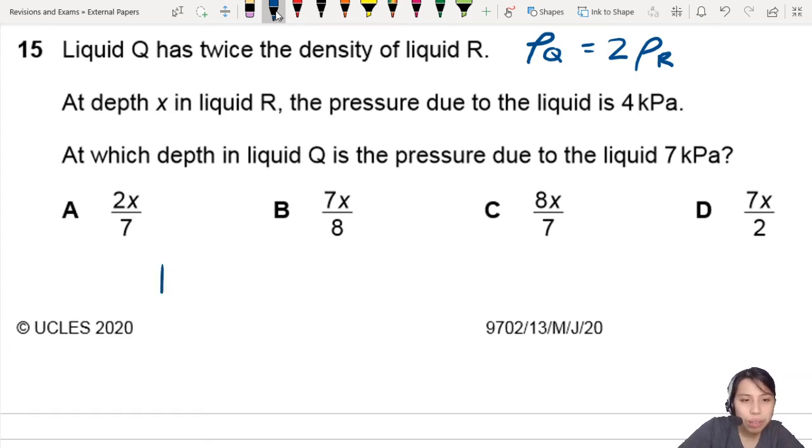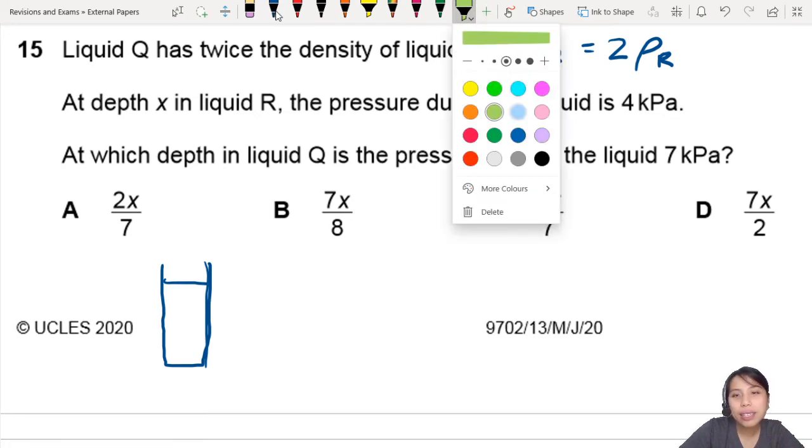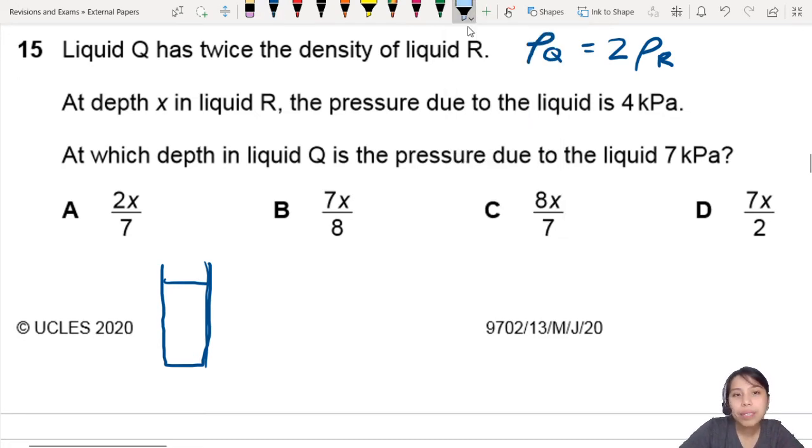So if I draw a container of liquid here, I'm saying that at a certain depth, something like this, X in liquid R, so maybe this whole height of water X, the pressure is 4 kilopascals right at the bottom. So this is a column of water, and this is for liquid R.